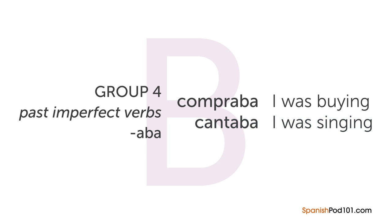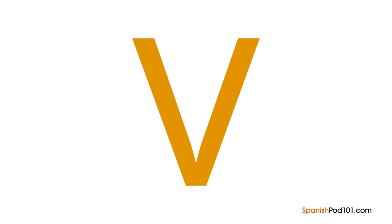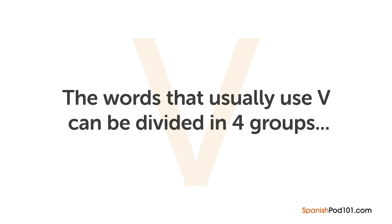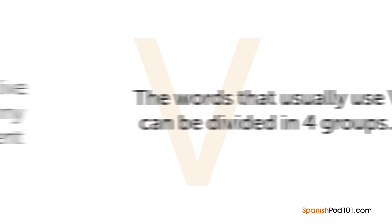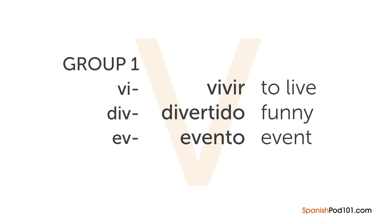Now let's see the rules for V. Words that usually use V can be divided into four groups. First, all words that begin with VI, DIV, or EV — for example, 'vivir' meaning to live, 'divertido' meaning funny, and 'evento' meaning event. Second, all forms in present indicative, imperative, and subjunctive of the verb 'ir' meaning to go — for example, 'voy' meaning 'I go,' or 've' in the imperative.